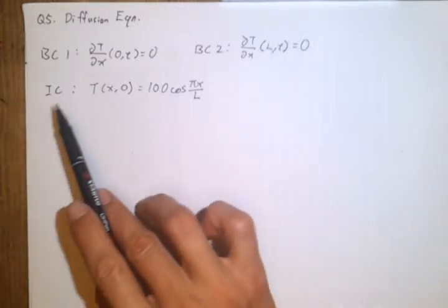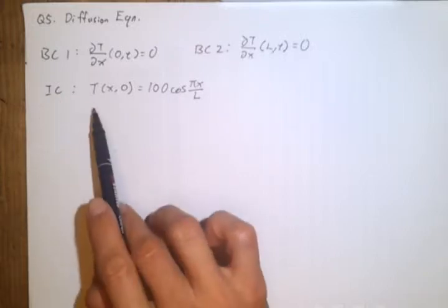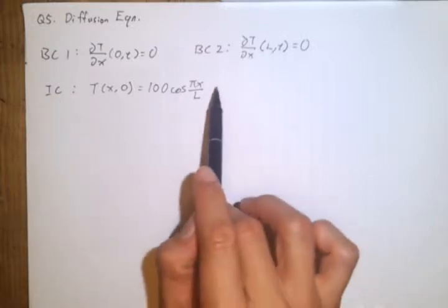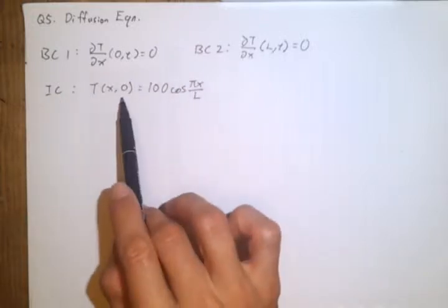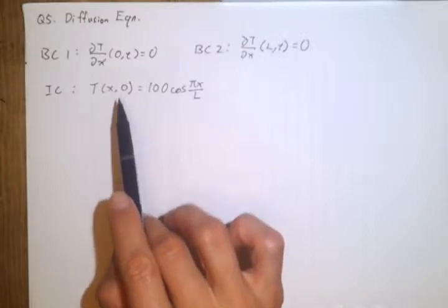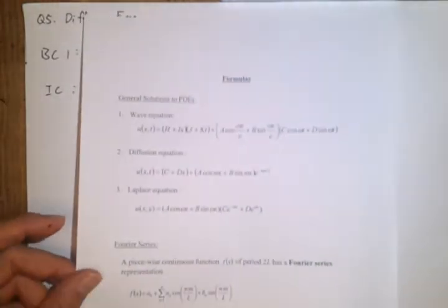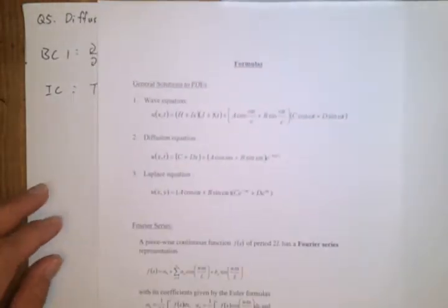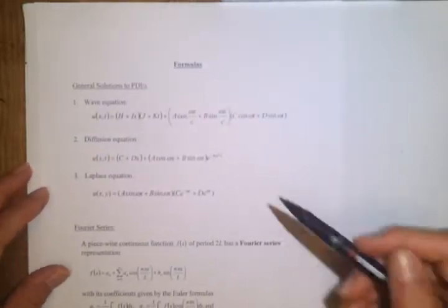So in the wave equation you have two initial conditions; the diffusion equation only has one initial condition. And this is the temperature at t equals to 0, so the initial condition. Take a look at your formula sheet — you will find that the general solution for the diffusion equation is this.